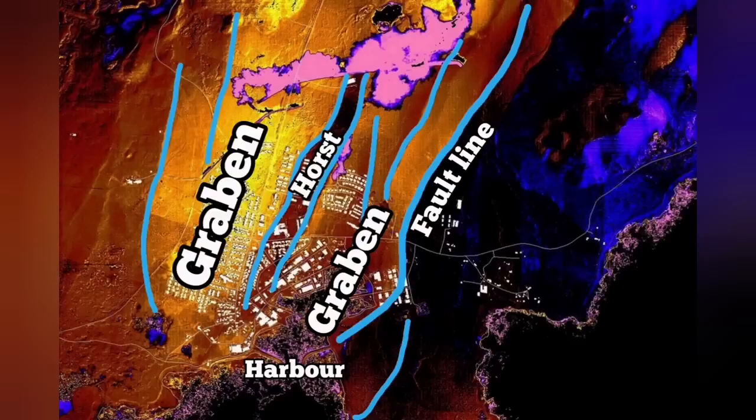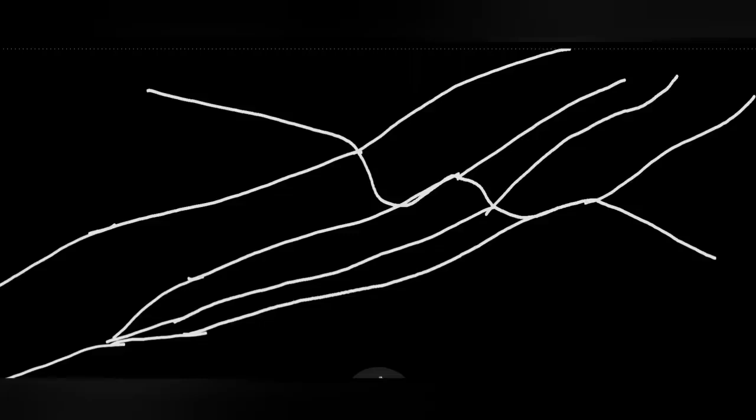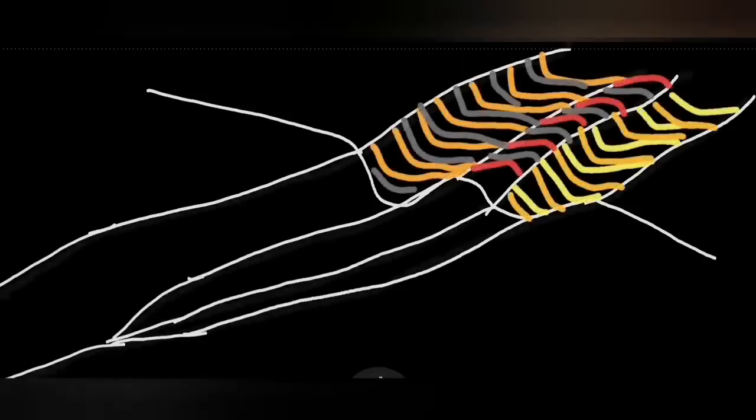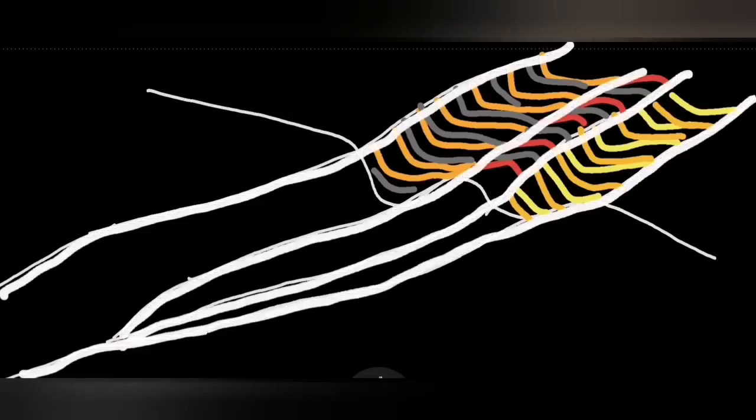This is now going to change, it seems. Off the shore of the Grindavik, in the harbor and toward the ocean, we have the continuation of this horse and graben. This is practically a rift, a rift valley.